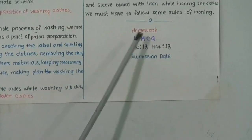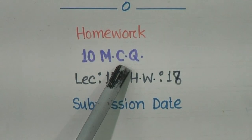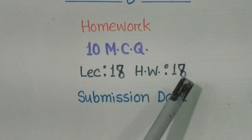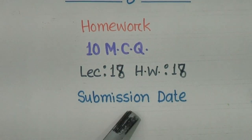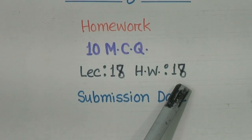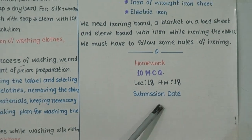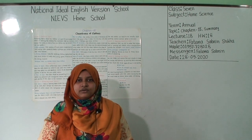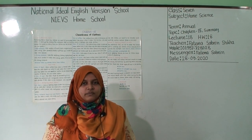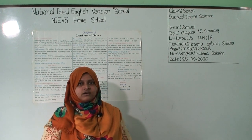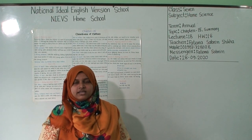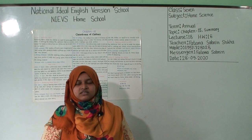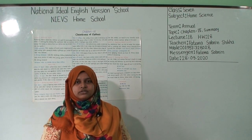Now it's time for your homework. Your homework will be 10 MCQ from Chapter 15 — write only the answers. Don't forget to write the lecture number and homework number with the submission date at the top of your copy. Lecture number is 18 and homework number is also 18. Submit your SW copies every Sunday and collect your previous copies the next Sunday. You will get your CT, diary, and SPMRs based on submission of your SW copies. That's all for today — keep practicing at home and abide by your parents. Assalamualaikum.